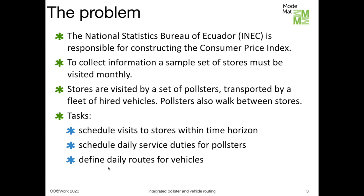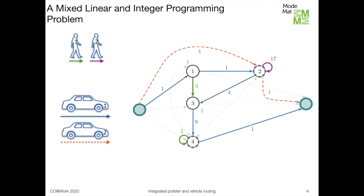Our problem consists of three main tasks. First, we have to schedule visits to the stores within a given time horizon, usually two to three weeks. Then we must schedule daily service duties for the pollsters, and finally we have to define daily routes for the vehicles of the fleet. Before giving a formal definition for the problem, let us look at a small example that I hope will help to illustrate the main ideas involved.